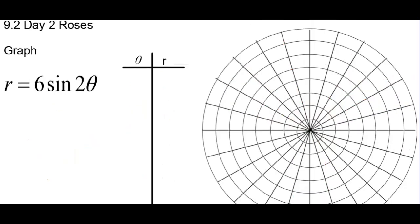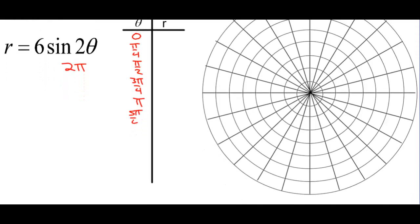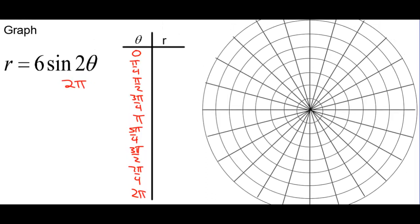Alright, now we have 6 sine of 2 theta. There will be 4 petals. We'll have to go all the way to 2 pi, and we'll count by pi over 4. We have 0, 1/4, 2/4, 3/4, 4/4 — there's halfway. We've got to go to 2 pi: 5/4, 6/4, 7/4, and then finally 8/4 which is 2 pi. Let's plug 0 in: sine of 0 is 0, so that'll be 0. When we plug pi over 4 in, sine of pi over 2 is 1, that'll be 6. Then 0, negative 6, 0, 6, 0, negative 6, 0. So there's the pattern because we counted by pi over 4s.